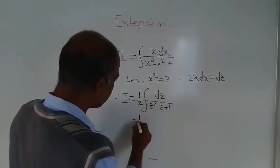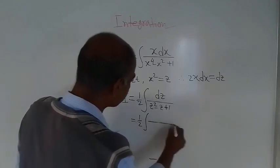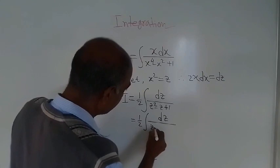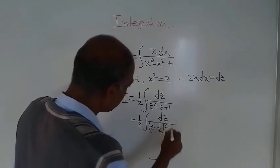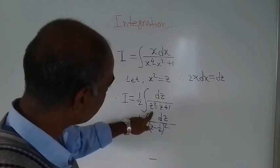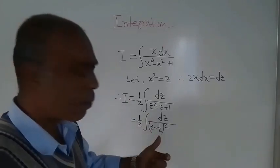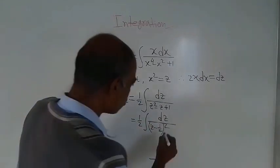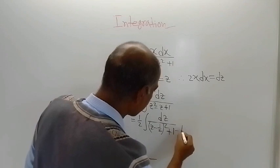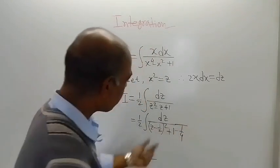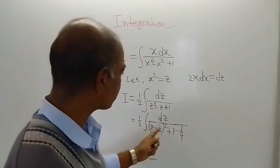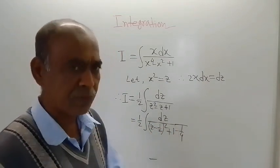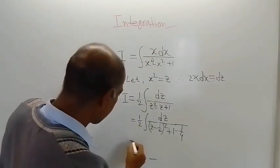Now this can be written as integration of dz divided by z minus half whole square. Here z square is there, then minus 2ab, that is minus z, then plus 1 by 4 is there. So to adjust that term, because 1 by 4 plus 1 by 4 was taken as extra, you have to put here minus 1 by 4.